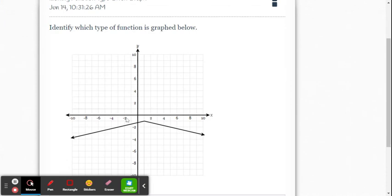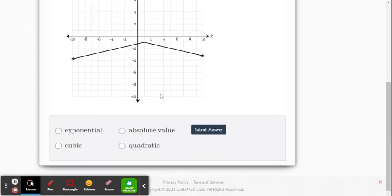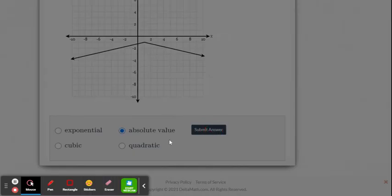Next problem. Oh, that's that V, but it's upside down. That's OK. It's still an absolute value function. Submit the answer.